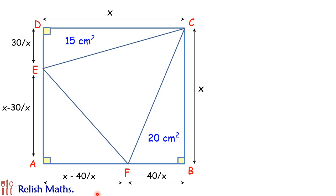Now solving further. Let's look at triangle EAF. Area is given as 21 cm squared. Using formula half of base into height is 21. The values of AF and AE we have already calculated in terms of x. Putting those values here, we will get half of x minus 40 by x times x minus 30 by x is 21.